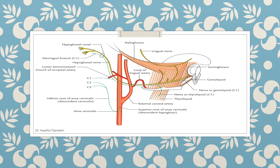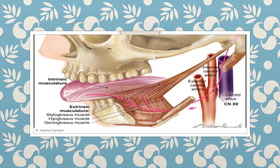This is the total course of the hypoglossal nerve, showing how it passes between the internal and external carotid arteries, between the internal jugular vein, and travels over the hyoglossus and mylohyoid. It passes through the loop of the lingual artery — here you can see the loop of the lingual artery. This is another view of the hypoglossal nerve.